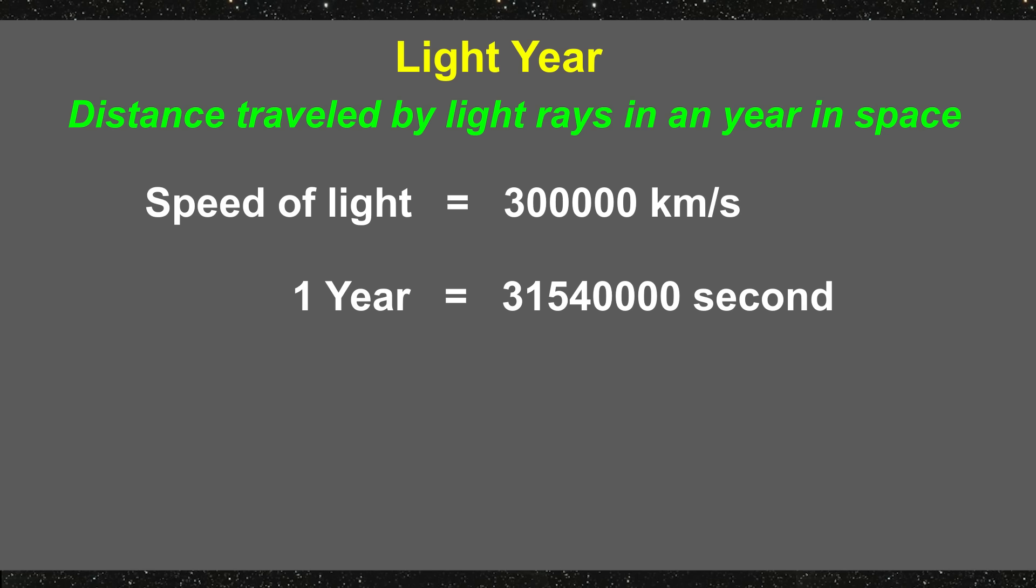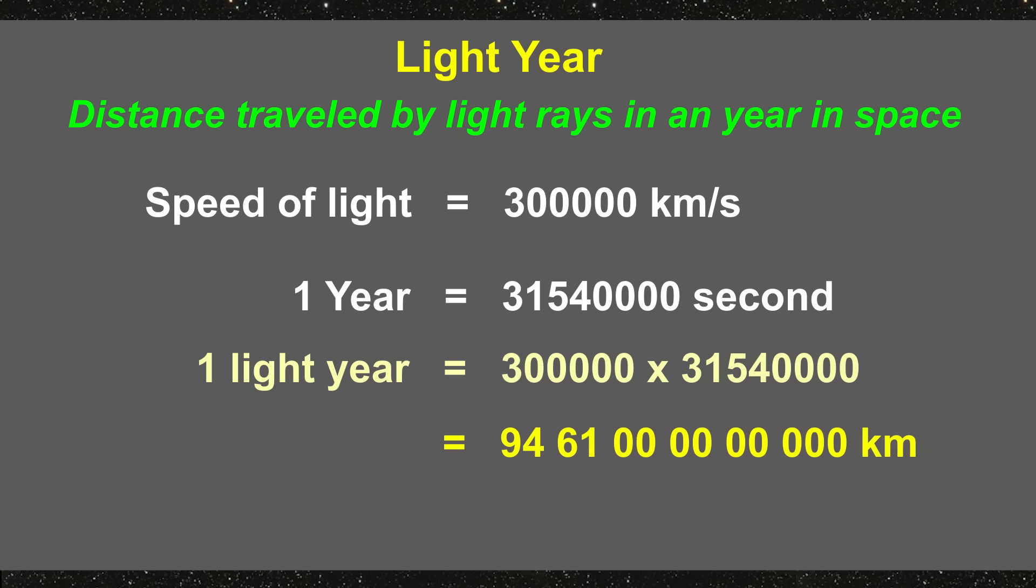In a year there are 3 crore 15 lakh 40 thousand seconds. So the distance travelled by light in one year equals 3 lakh multiplied by 3 crore 15 lakh 40 thousand, which comes out to be 9 lakh 46 thousand 100 crore km.